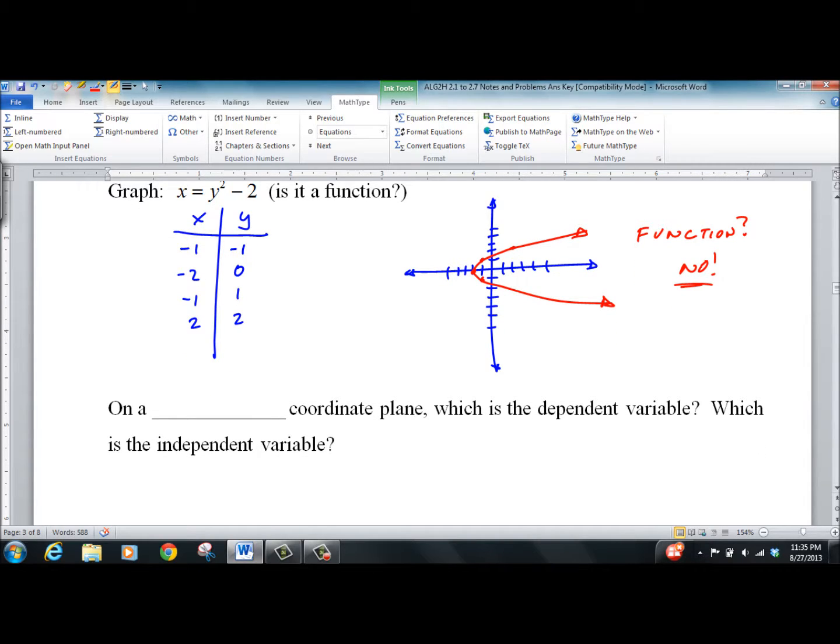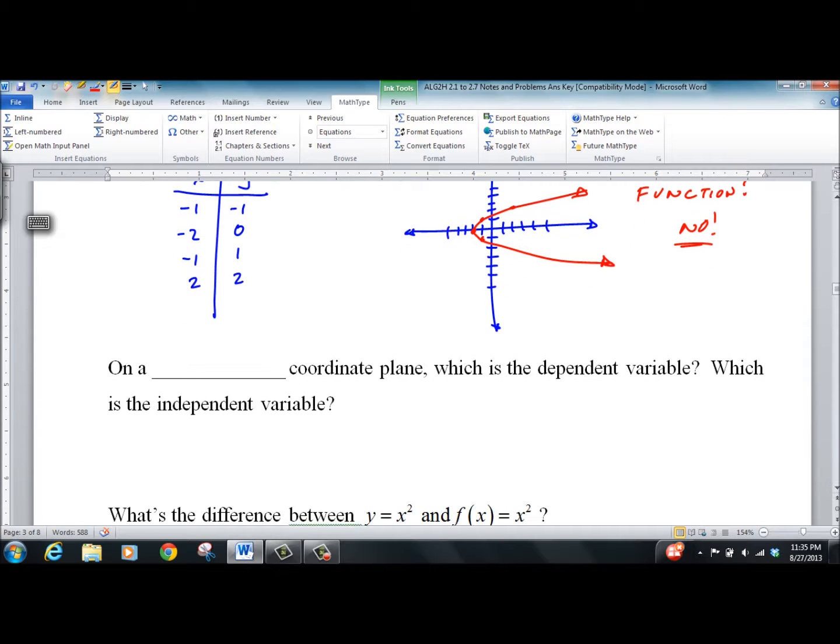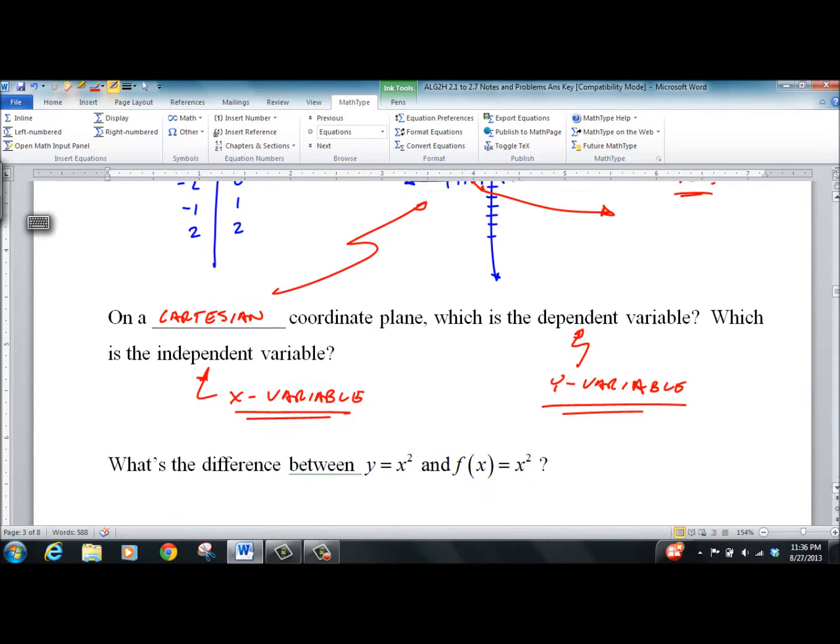So, that's just a simple way to graph. Even simpler ways to use your calculator, which we'll talk about another time. We call this thing here the Cartesian coordinate plane. What's the dependent variable on that? And what's the independent variable? The independent variable is always the x variable. That's the number we always plug in. And the dependent variable is the y variable. That's the number we always get out. Which is why you see it as y equals. So, often, y depends on x. x does not depend on y. Generally speaking.